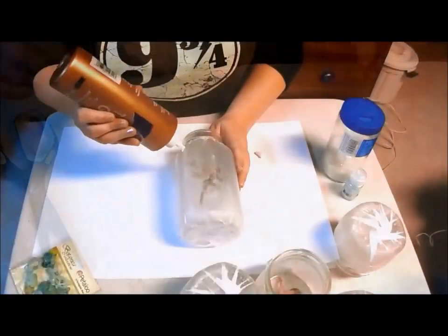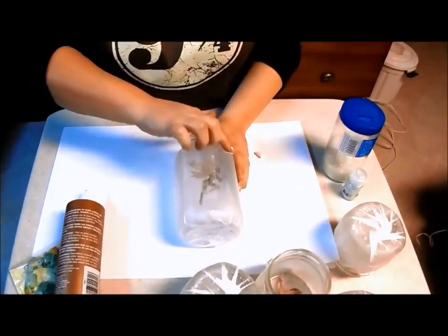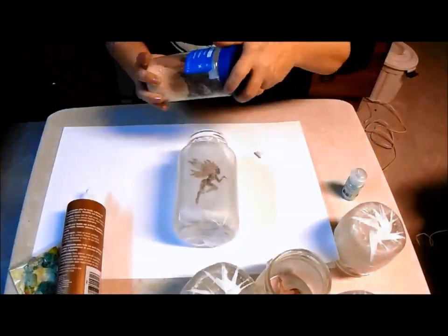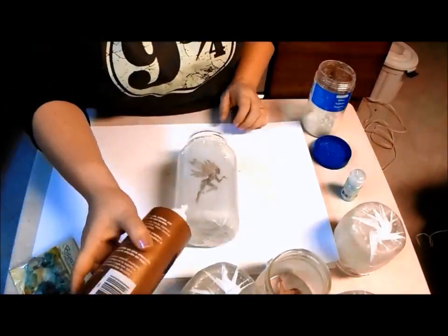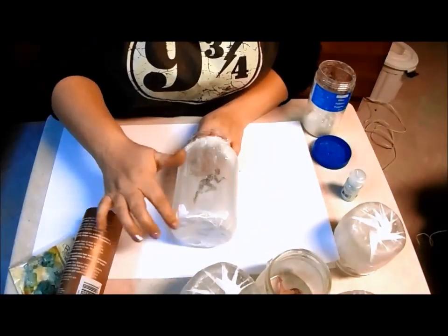Turn the jar upside down and allow to dry. Once dry, apply some glue to the top and bottom edges and add clear glitter.